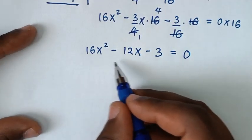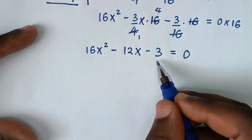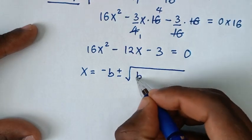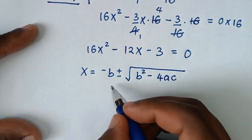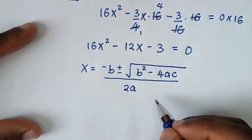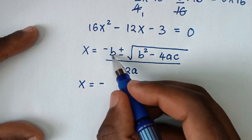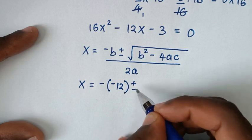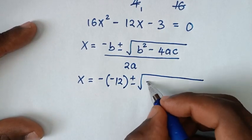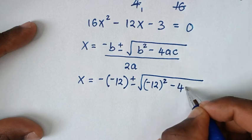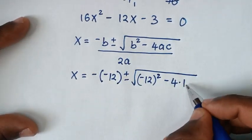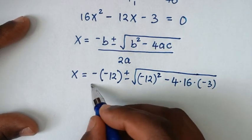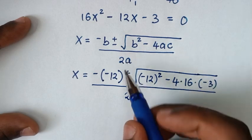Then in the next step, we solve this quadratic equation using the quadratic formula: x equals negative b plus or minus square root of b squared minus 4ac, over 2a. So x equals negative b — b is the coefficient of x, which is negative 12 — plus or minus square root of (negative 12) squared minus 4 times a (which is 16) times c (which is negative 3), over 2 times 16.